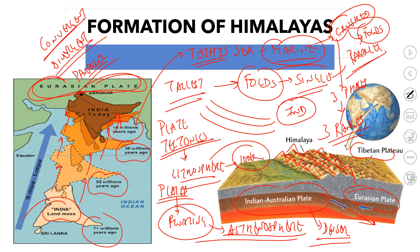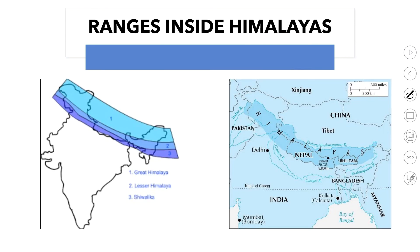The movement of the Indian plate started 70 million years ago and the major collision finished approximately 10 million years ago, but the Indian plate is still colliding with the Eurasian plate — this process is still dynamic and ongoing. This is why the mountains of the Himalayas are getting elevated by approximately 10 centimeters every year. The three phases of crushing of Tethys Sea marine sediments correspond to the three parallel ranges found inside the Himalayas.